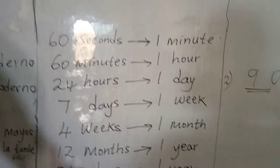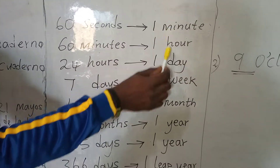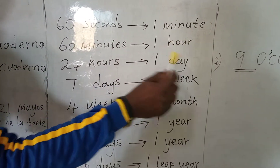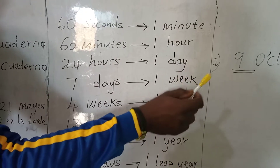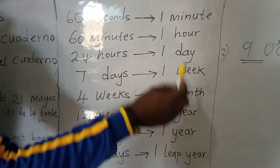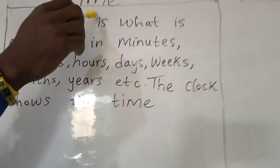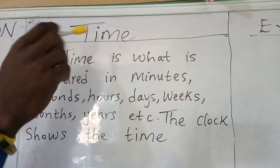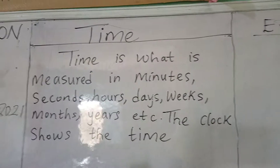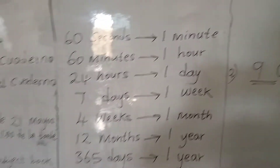That is all about the units of time: minutes, hours, days, weeks, months, and years. It is all about time. Now we are going to look at the clock.